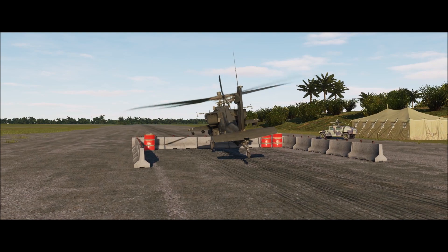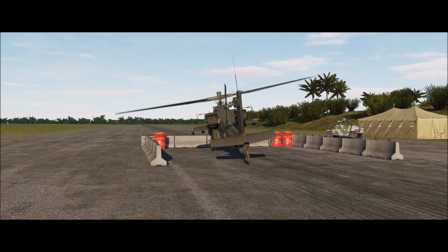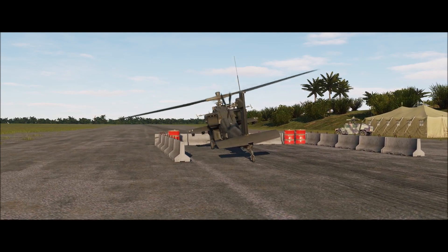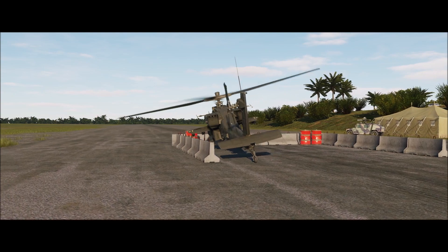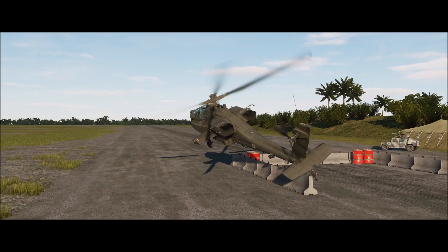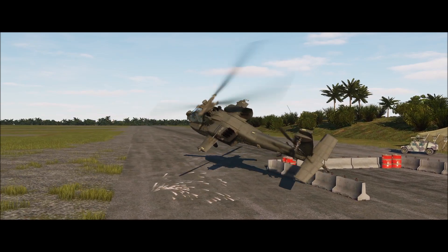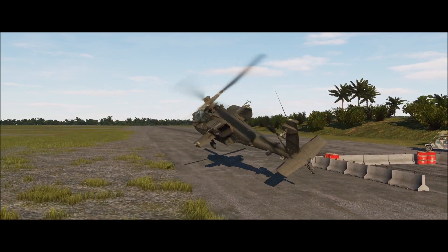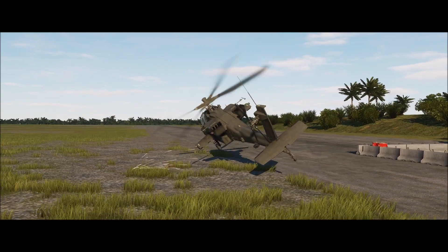And as the roll rate increases after we contact our pivot point, that horizontal component of lift increases and pulls the helicopter over onto its side. And we've now entered into dynamic rollover.